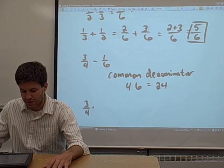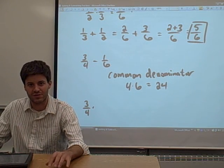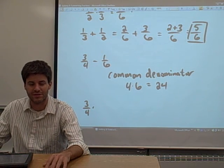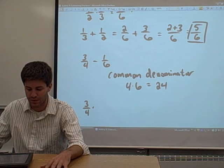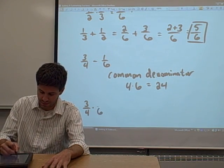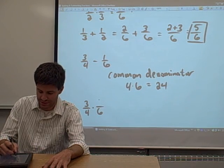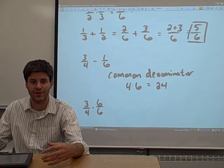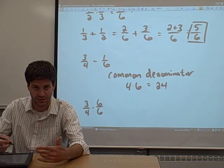So again, let's go through the steps. 3 fourths. We want to change 3 fourths into a fraction that has a denominator of 24. The way that we got this in the first place was by multiplying it by 6. So we want to multiply the denominator by 6. To make that legal, we have to multiply the numerator by 6. So 6 over 6.